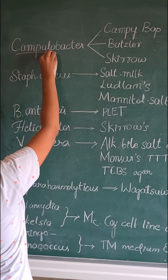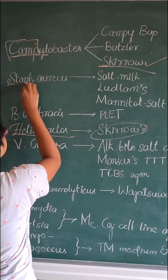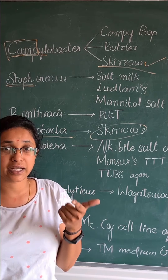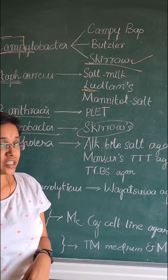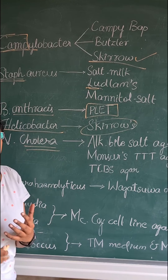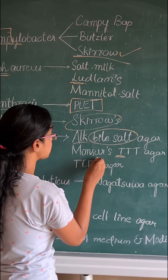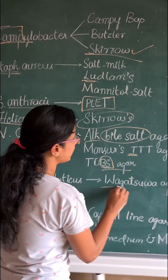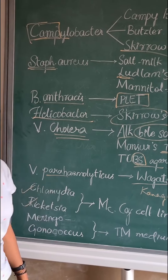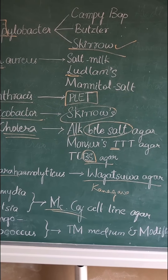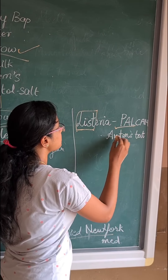Summary: For Campylobacter — Campy, Butzler, and Sclerous media; Sclerous medium also for Helicobacter. For Staphylococcus — salt milk agar, mannitol salt agar, and Ludlam's media. For Bacillus anthracis — PLET medium. For Vibrio cholerae — alkaline bile salt agar, TCBS, tellurite taurocholate tryptone agar. For Vibrio parahemolyticus — Wagatsuma agar, Kanagawa phenomenon. For Chlamydia and Rickettsia — McCoy cell line. For meningococcus and gonococcus — Thayer-Martin and modified Thayer-Martin medium. For Listeria — PPLO medium and Anton's test.